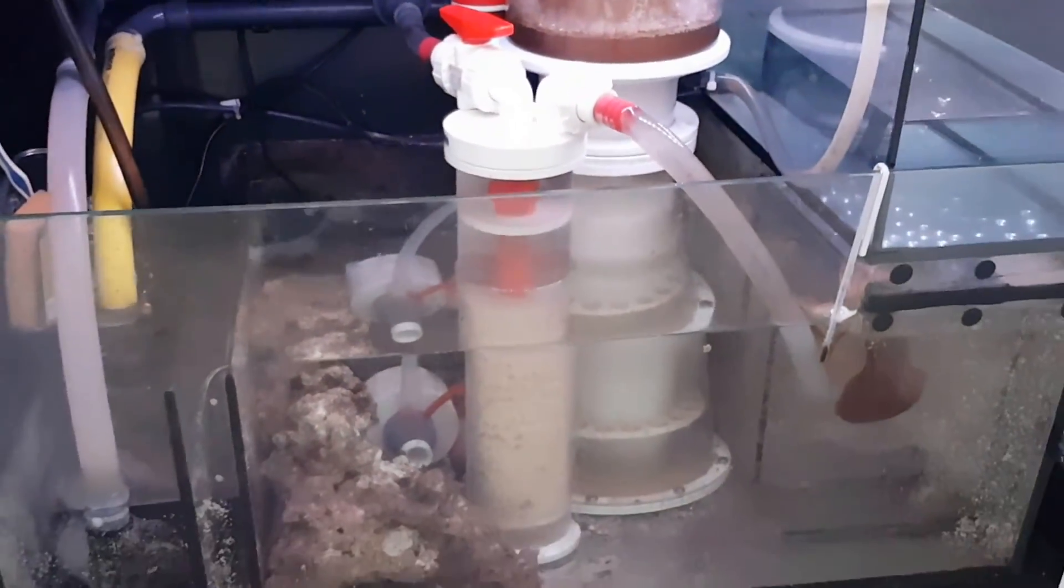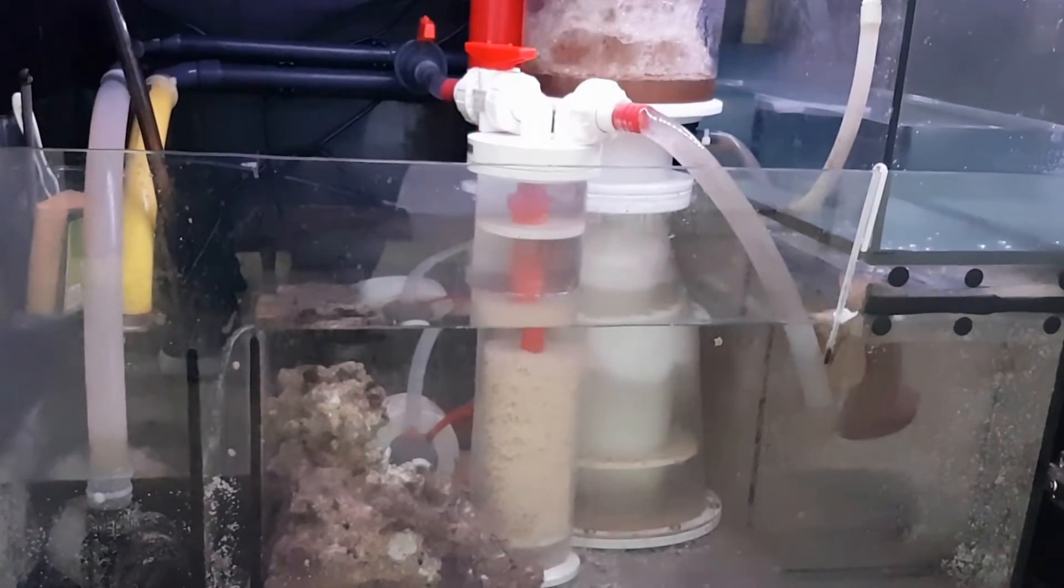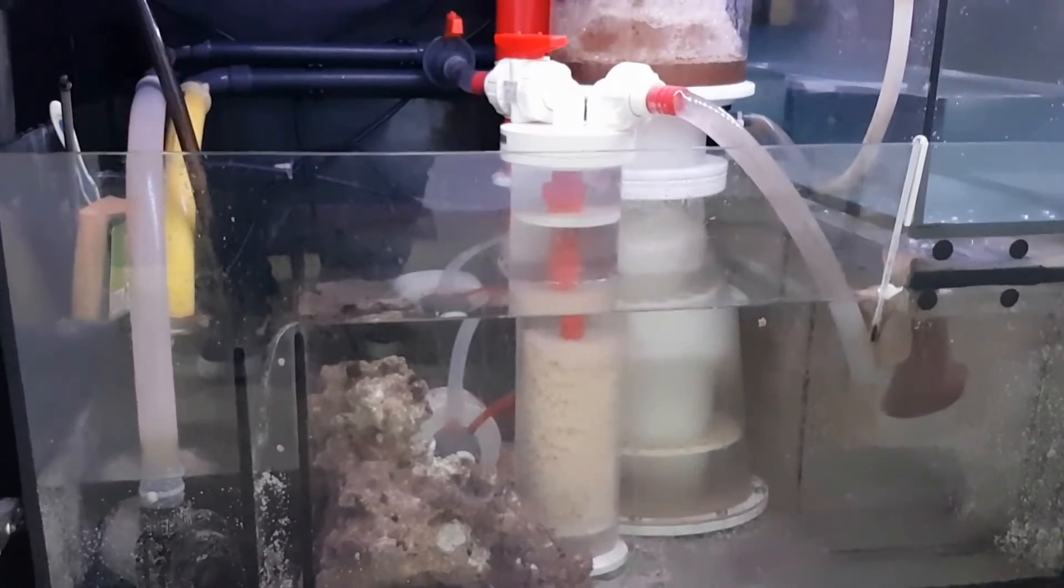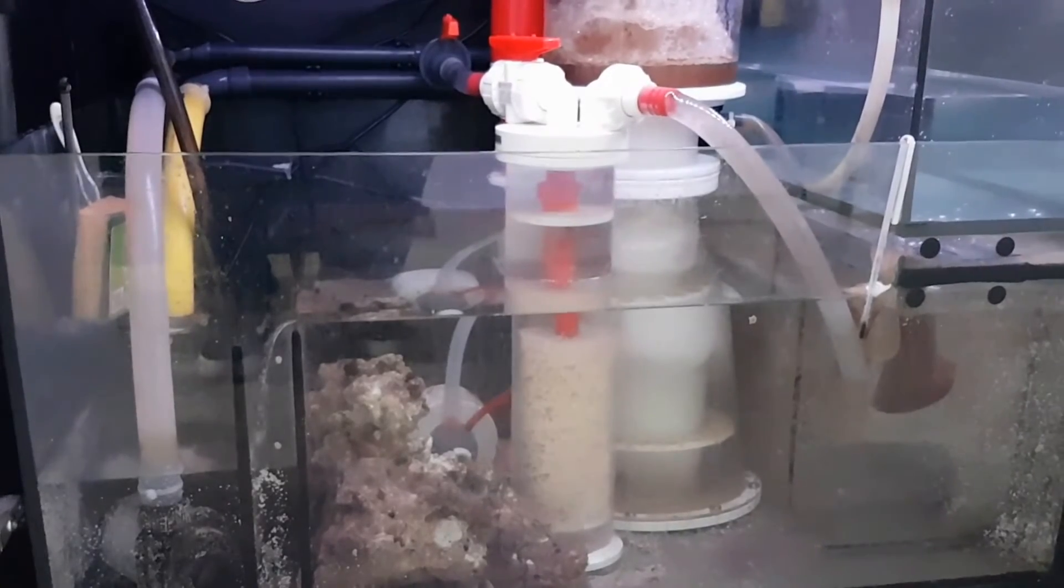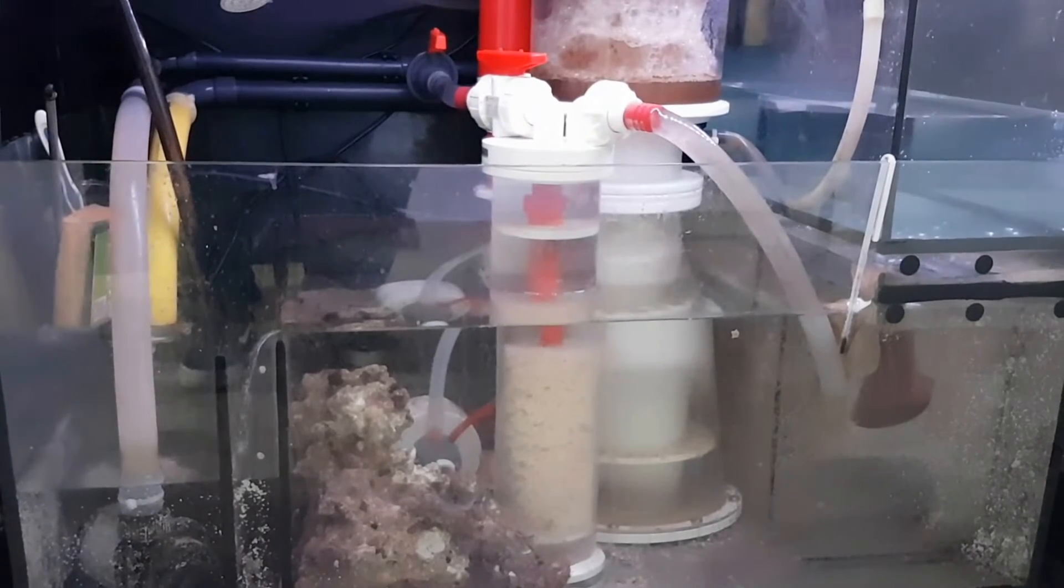Let's start with the biopellet reactor. It's as I mentioned before a Vertex biopellet reactor. You can use different media inside, but since my nitrates are on the high side around 20, I decided I would run a biopellet reactor just to keep it under control.